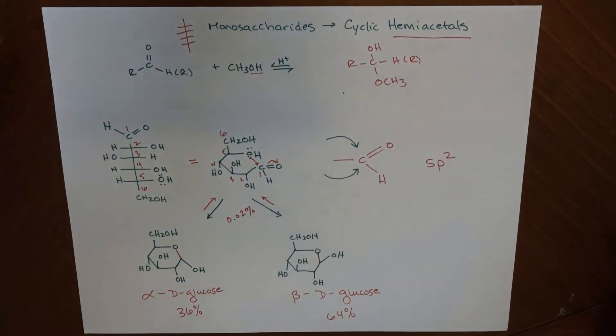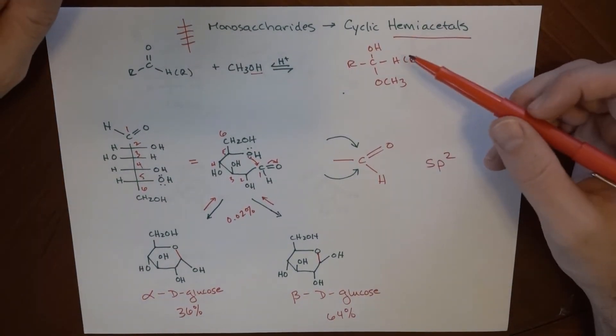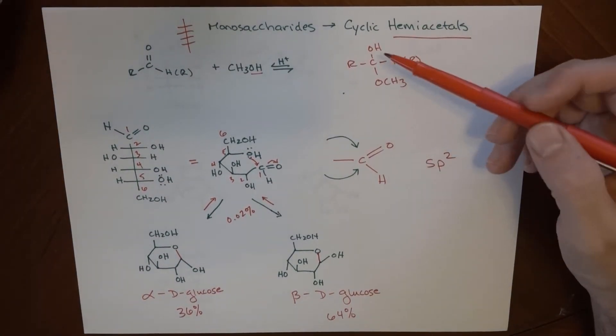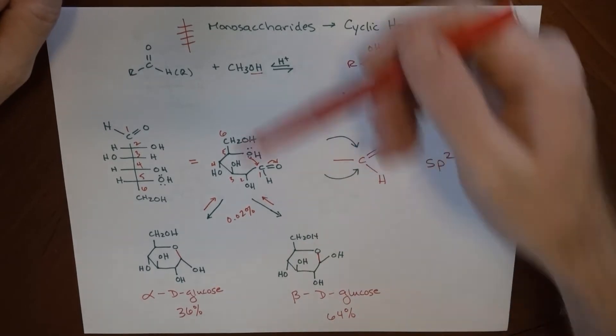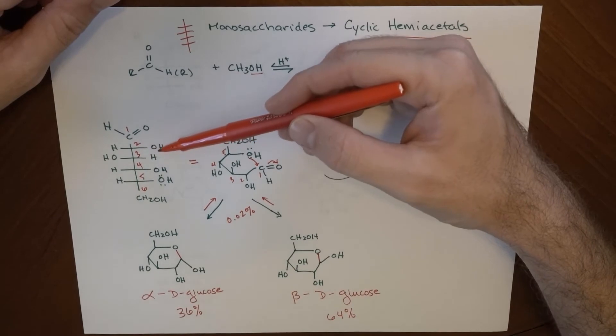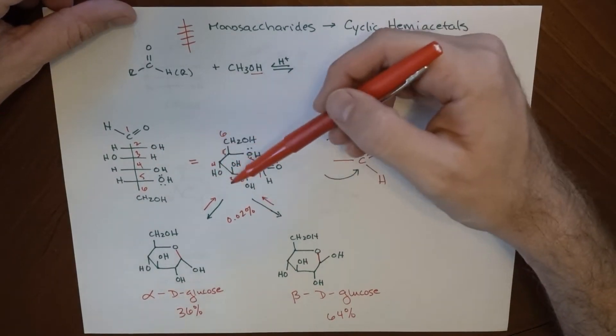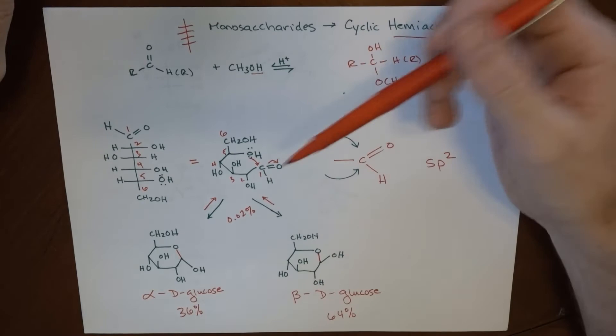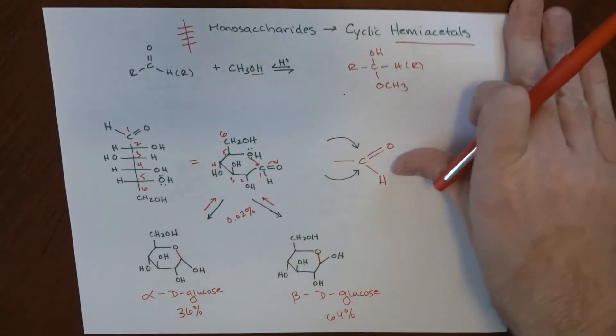This is an equilibrium. It goes back and forth, and it's a cyclic hemiacetal. And the things you want to pay attention to are the stereochemistries here. So, if these OHs are on the right, we tend to show them pointing down. If they're on the left, we tend to show them pointing up. And that preserves the stereochemistry as we go through this.